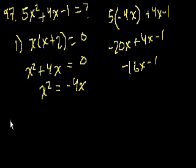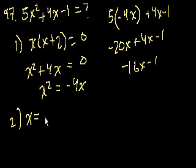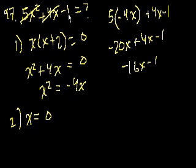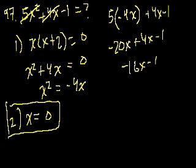Statement 2: x = 0. That's all we need. If x = 0, then 5x² = 0, 4x = 0, and we're left with −1. So only statement 2 is necessary. The answer is B.